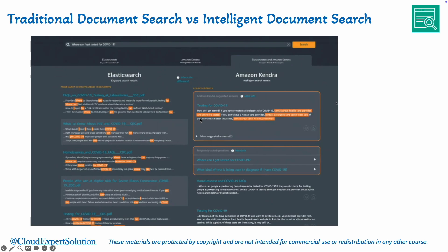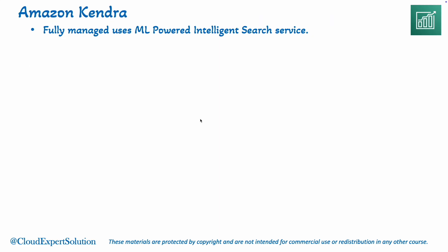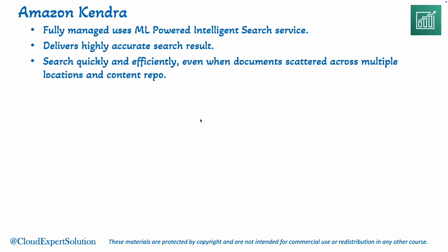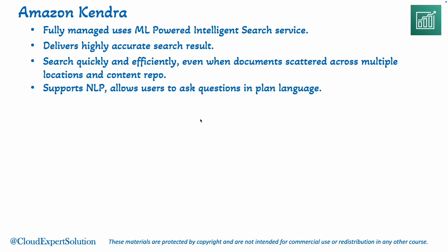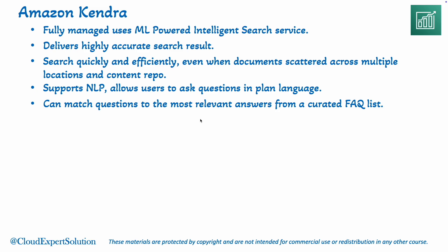However, when you search with Amazon Kendra, it tries to provide the answer or the location of the test center. Amazon Kendra is a fully managed service provided by AWS that uses machine learning to deliver highly accurate results. It helps organizations find the information they need quickly and efficiently, even when it's scattered across multiple locations and content repositories. Amazon Kendra uses machine learning to understand natural language queries and deliver more relevant answers from unstructured data. It can also match questions to the most relevant answers from a curated FAQ list, making it ideal for customer support.